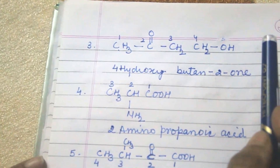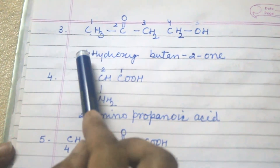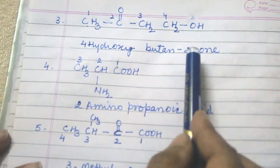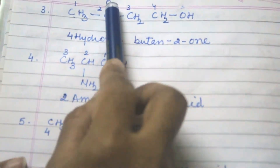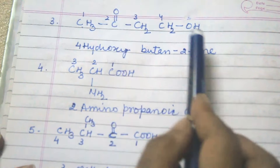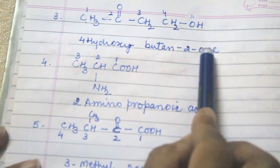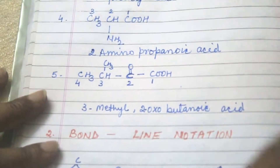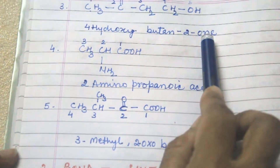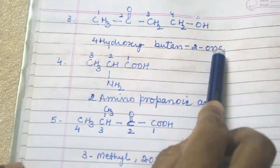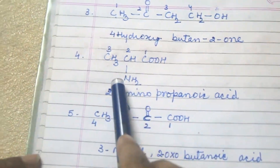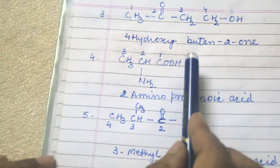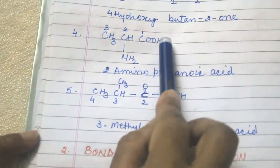According to alphabetical order, the name is 4-hydroxybutane-2-one, because for ketone we use the suffix '-one' as you have studied in 10th class.